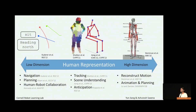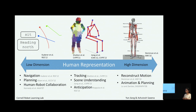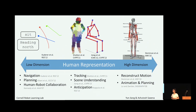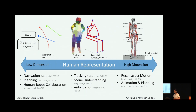Modeling humans has always been an important problem for robots working in our environments. We have designed many different ways to represent humans. On the low-dimensional end of the spectrum, a representation can be as simple as a text label or 2D trajectory, convenient for navigation, symbolic planning, or human-robot collaboration. A slightly more detailed model includes basic joints and limbs, typically used for tracking, scene understanding, and anticipation. On the other end of the spectrum, a very complicated human model carries information of every bone, muscle, and joint, which can lead to hundreds of dimensions of data to specify just one static pose.